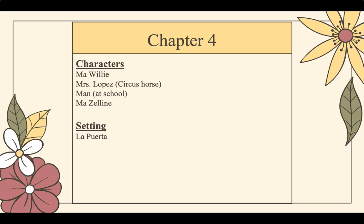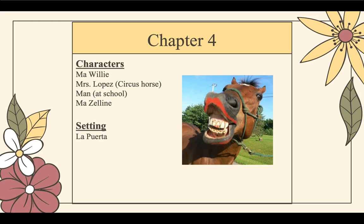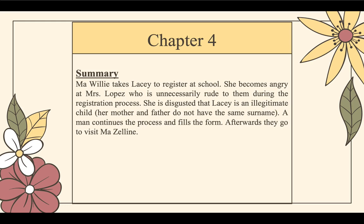Chapter 4. Characters here: Ma Willy, Mrs. Lopez — who Ma Willy refers to as a circus horse — there's also the man at school and we have Marceline. The setting is La Puerta, so we are out of Suklal Trace now. Summary: Ma Willy takes Lacey to register at school. She becomes angry at Mrs. Lopez, who is unnecessarily rude to them during the registration process. She is disgusted that Lacey is an illegitimate child, and it is here we observe that her mother and father do not have the same surname. A man continues the process and fills out the form. Afterwards, they go to visit Marceline and they have a good time.